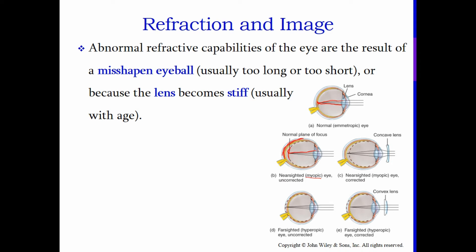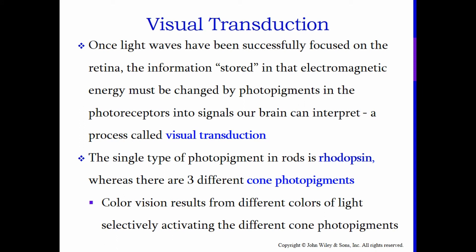To correct myopia, you give the person a concave lens, which bends the light enough to compensate for the deeper eyeball and allows the light to be focused on the retina. If someone is hyperopic or farsighted, it's the opposite — their eyeball is shorter, and the light doesn't get a chance to focus before it hits the retina. So they receive a convex lens that bends the light enough to get it to focus on that closer retina.